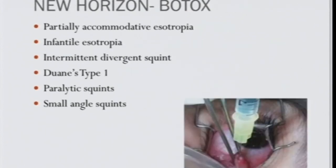Botox was used more commonly in the early 1990s but now has very rare indications. The best use is in paralytic squint from lateral rectus palsy — my calculation is based on the secondary deviation: 50 prisms = 5 units, 40 prisms = 4 units, though Alan Scott has a different protocol.